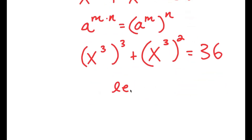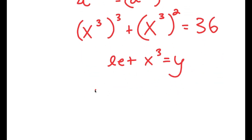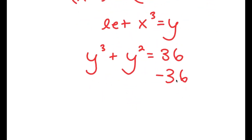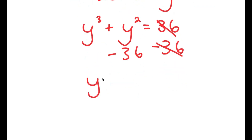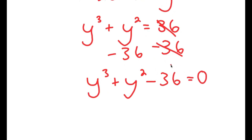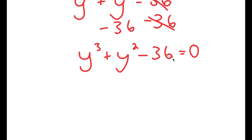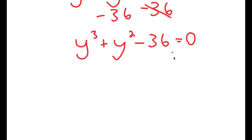I'm going to let x to the power of 3 equal the variable y. Substituting y in, I get y to the power of 3 plus y squared is equal to 36. Subtracting 36 on both sides gives y cubed plus y squared minus 36 equals zero. To solve equations like these, we have to first find one solution, then use that solution to find the remaining ones. The only way to do that is to plug in values and see if they work.